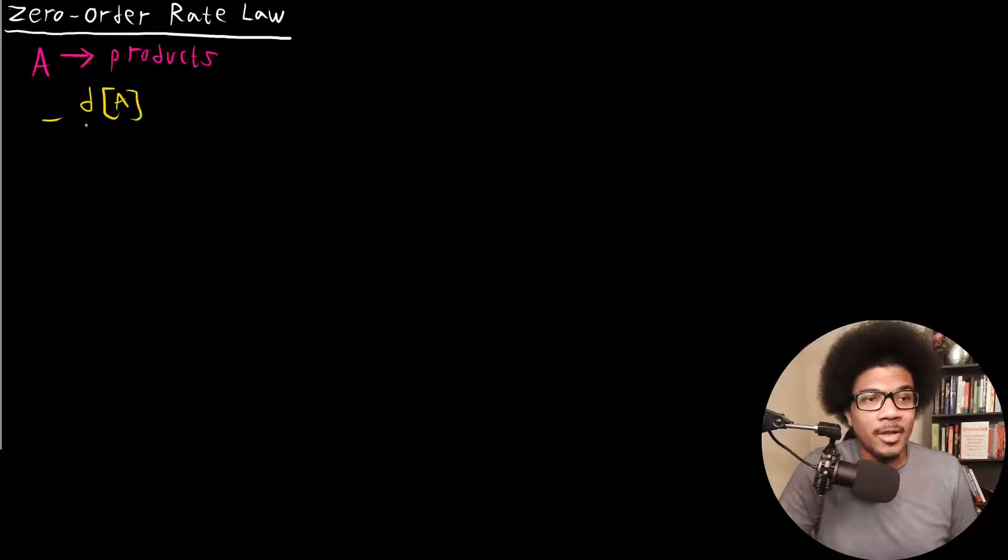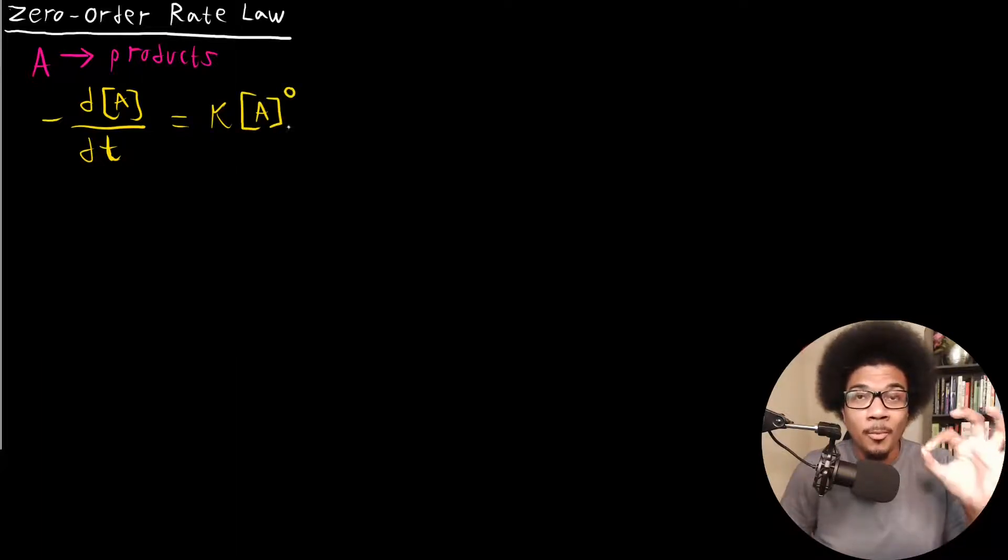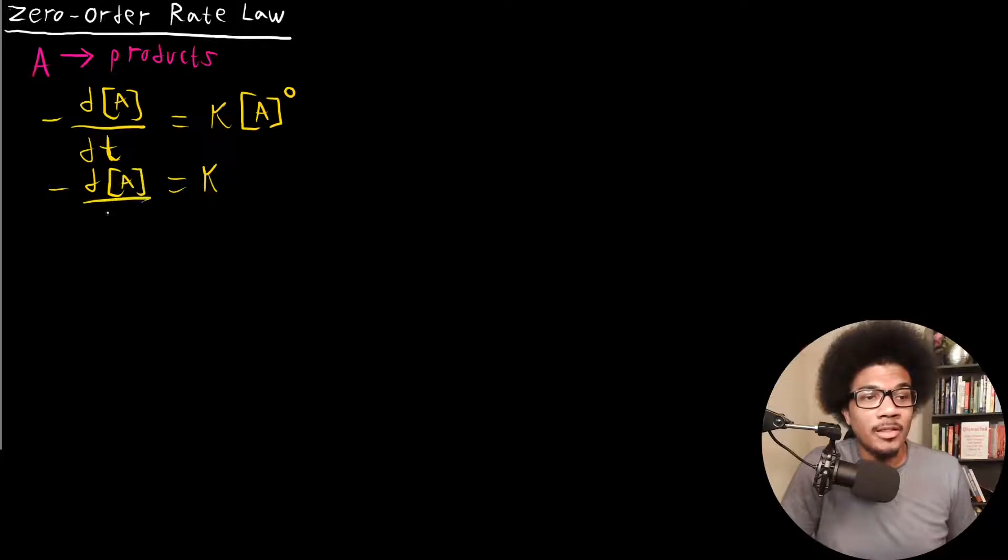the rate law in the following way, where we'll have the change in concentration over time as our way of expressing the rate, and that's going to be equal to K times the concentration of A raised to the zero power. Now, anything raised to the zero power is one, so we basically write out the differential rate law like this.